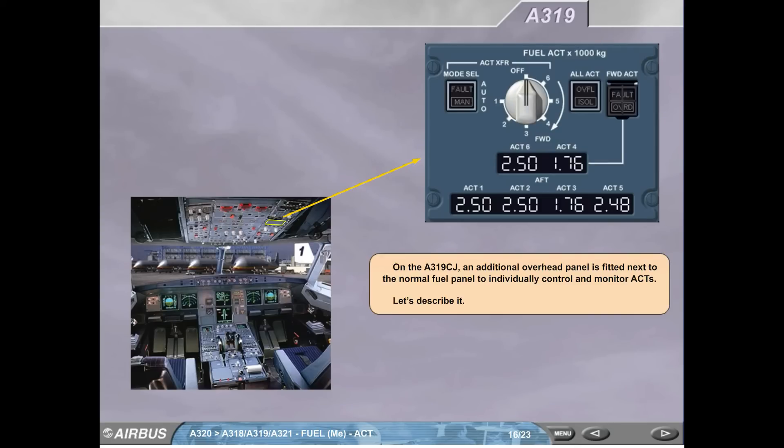On the A319CJ, an additional overhead panel is fitted next to the normal fuel panel to individually control and monitor ACTs. Let's describe it.